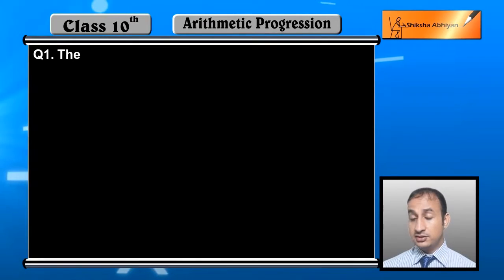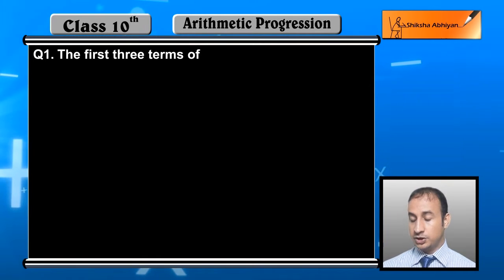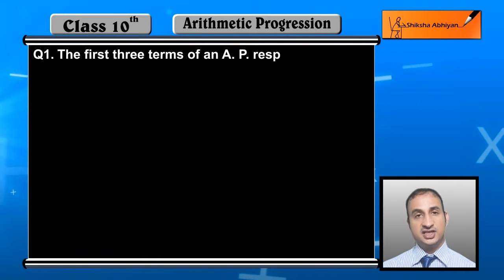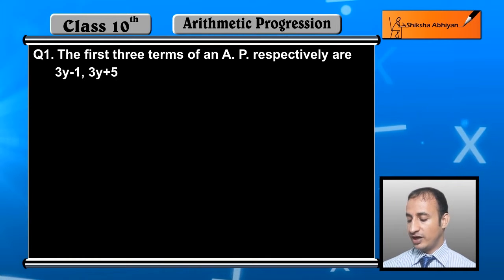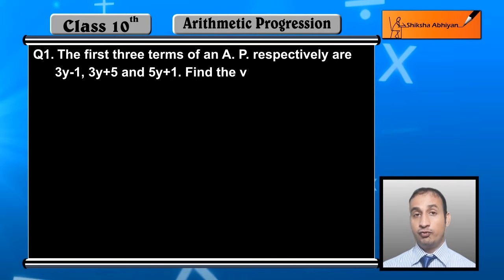The first three terms of an AP respectively are 3y-1, 3y+5, and 5y+1. Find the value of y.